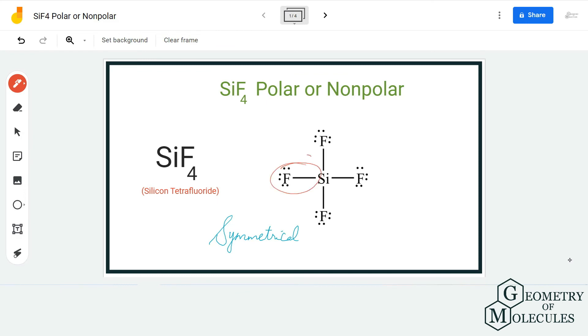be a dipole moment in the direction of the fluorine atom. The direction of the dipole moment will be from silicon to fluorine, and this will be the same for all four fluorine atoms. But